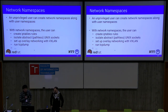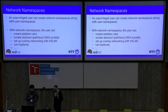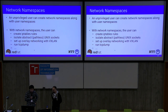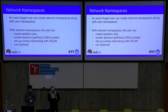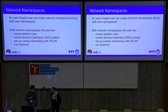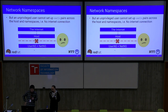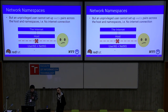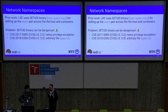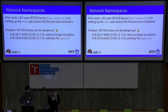You can create network namespaces together with user namespaces. With network namespaces, an unprivileged user can create iptables rules, isolate abstract Unix sockets, set up overlay networking with VXLAN, run tcpdump, and do a bunch of other things. However, an unprivileged user cannot set up a virtual Ethernet pair across the host and a namespace, which means the namespace cannot connect to the internet.